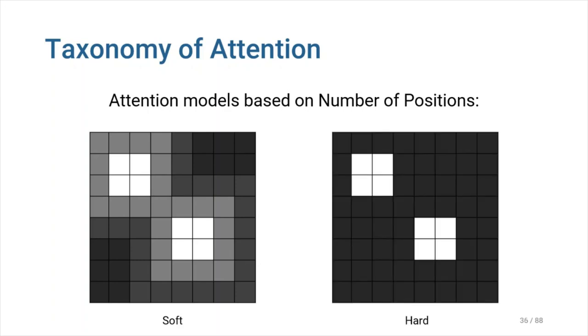Hard attention just pays attention to one part of the input sequence at a time. It means we need less calculations during inference, but the model is non-differentiable, which will need more complex teaching strategies like variance reduction or reinforcement learning.